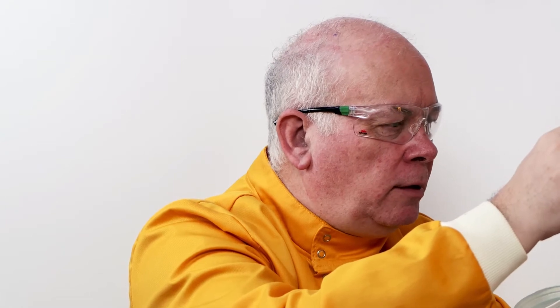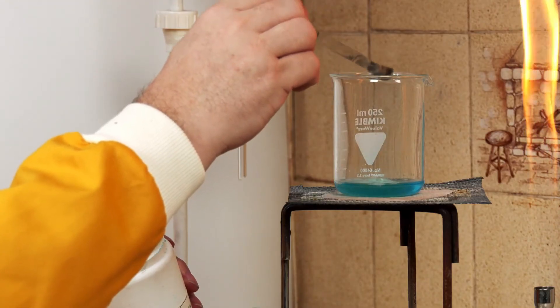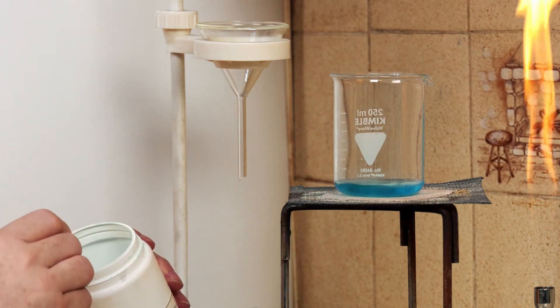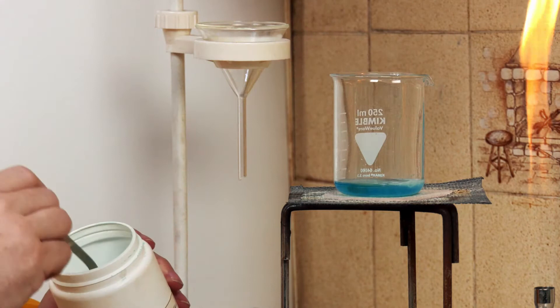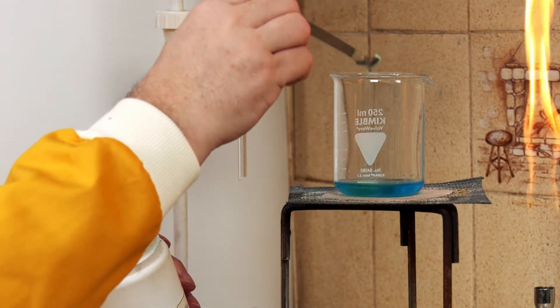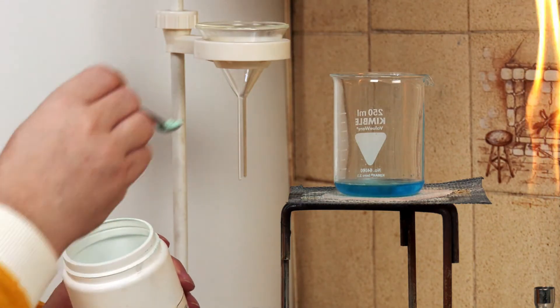In a different experiment we've looked at making this using copper oxide but in this case it's easier to see the reaction working because the carbonate reacts making this carbon dioxide as well as we can see the dark blue appearing.